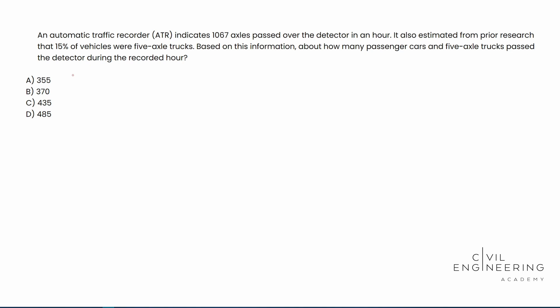An automatic traffic recorder (ATR) indicates 1,067 axles passed over the detector in an hour. It also estimated from prior research that 15% of vehicles were five-axle trucks. Based on this information, how many passenger cars and five-axle trucks passed over the detector during the recorded hour?